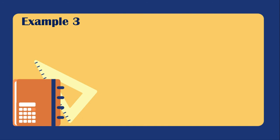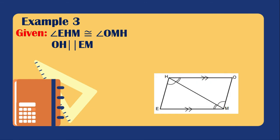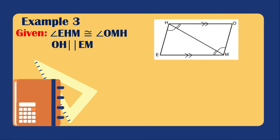Example number three. Our givens are: angle EHM is congruent to angle OMH, and OH is parallel to EM. This is the illustration — as you can see, OH is parallel to EM, shown with two arrows denoting parallel lines, meaning the two lines will not meet even if extended in either direction. We need to prove that EH is congruent to OM.